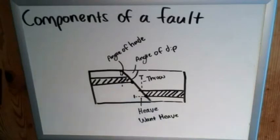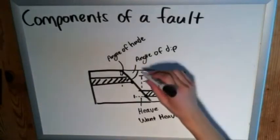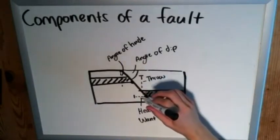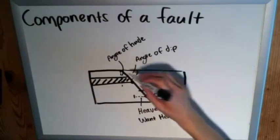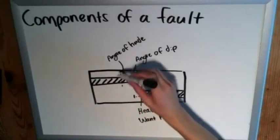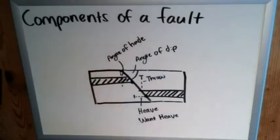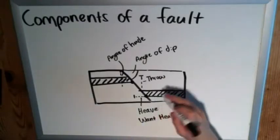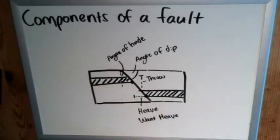So those are four simple components. Angle of dip, the upper angle that is next to the actual fault itself on the hanging wall always, and then the angle of hade is next to it on the footwall. And then the throw and the heave are the vertical and horizontal components of the displacement of the strata itself respectively.